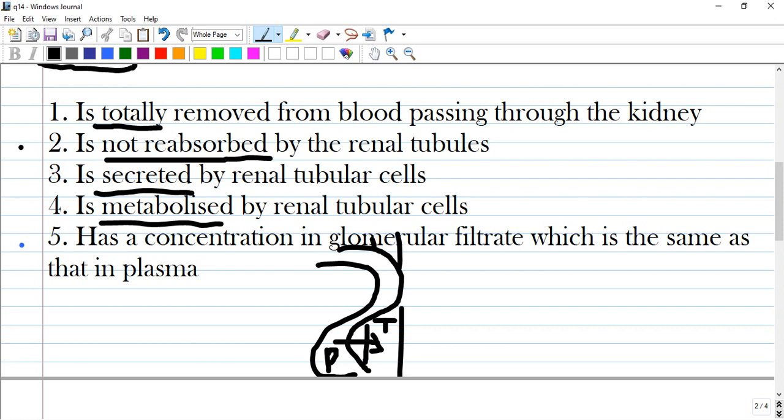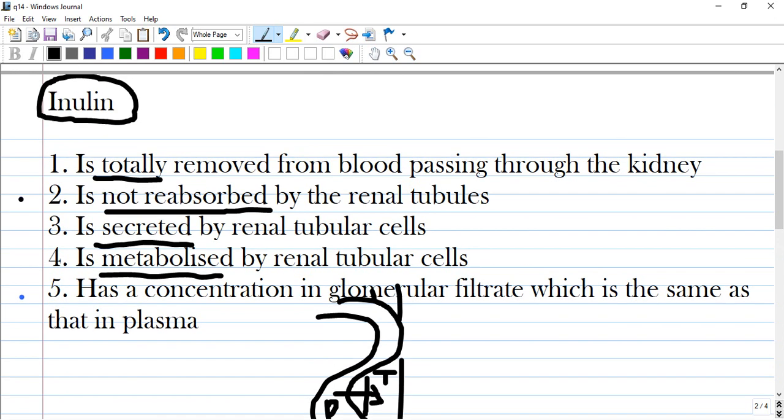And when we are measuring the quantity of inulin in the urine, we are comparing it to the plasma as it is equal. And the importance of inulin is in measuring glomerular filtration rate.